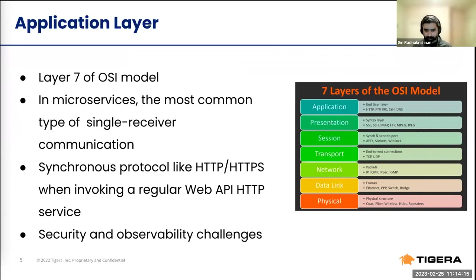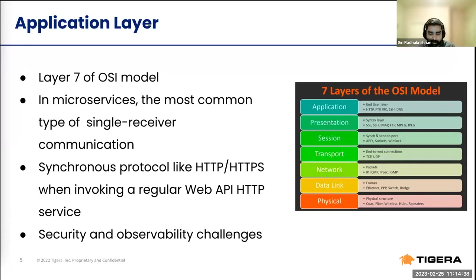Some of you may not be familiar with the OSI model — the basics of networking. The OSI model talks about the seven layers of networking. If you're curious what happens when you type a domain address in your browser, you can go through each layer on this model and explain how the internet works. The topmost layer is the application layer — layer 7. Everyone here knows about HTTP, which is a protocol at layer 7, and that's what we're interested in.